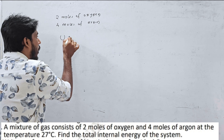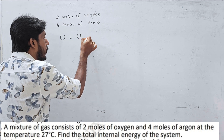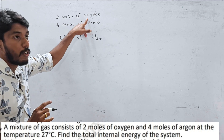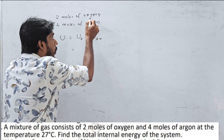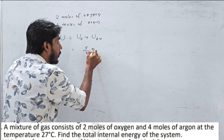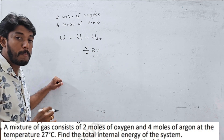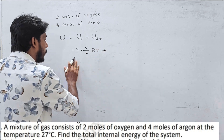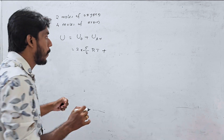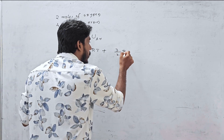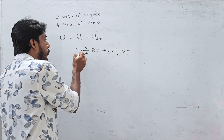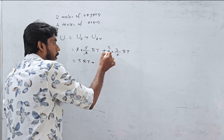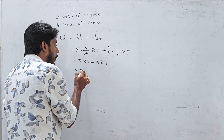You must remember that oxygen is diatomic and argon is monoatomic. The total internal energy = U(oxygen) + U(argon). Oxygen is diatomic: U = n×(5/2)RT = 2×(5/2)RT = 5RT. Argon is monoatomic: U = n×(3/2)RT = 4×(3/2)RT = 6RT. Total = 5RT + 6RT = 11RT.